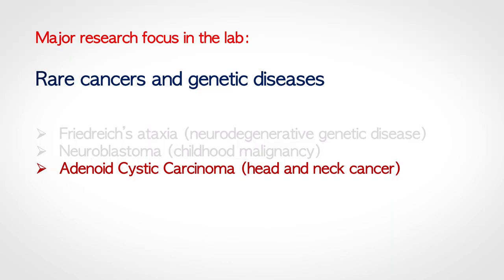My group is mainly interested in rare diseases — rare cancers but also rare genetic diseases. We have three main lines of investigation: Friedreich's ataxia, a rare neurodegenerative disease; neuroblastoma, a rare form of cancer affecting children and originating in the nervous system; and adenoid cystic carcinoma, which is the subject of today's talk.